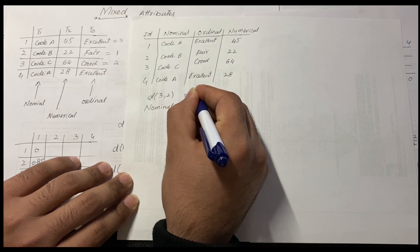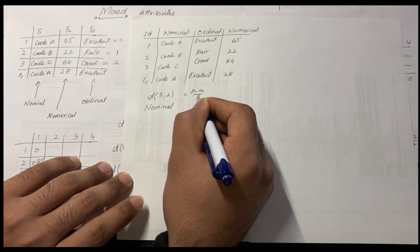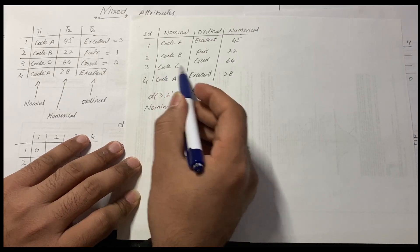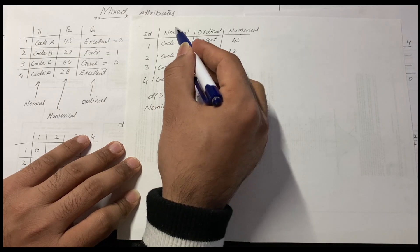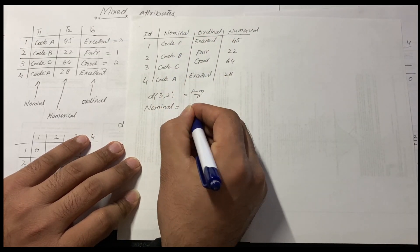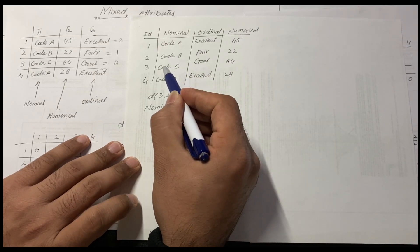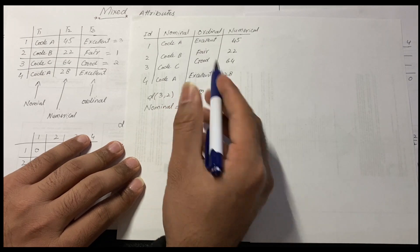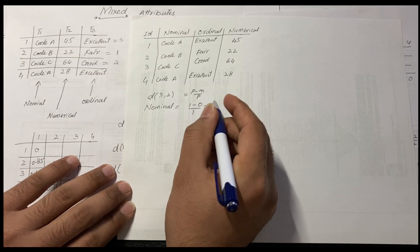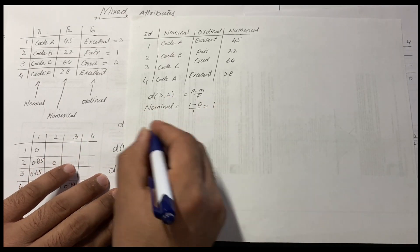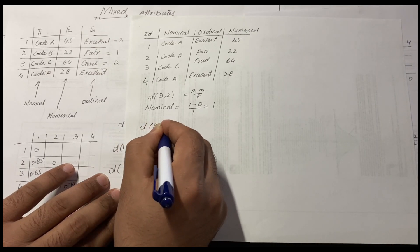First, we find the nominal dissimilarity d(3,2). For nominal, the formula is (p minus m) divided by p, where p is the number of attributes and m is the number of matches. We have just one nominal attribute, so p=1. Checking for matches between objects 3 and 2: there are none, so m=0. Therefore d(3,2) nominal = (1-0)/1 = 1.